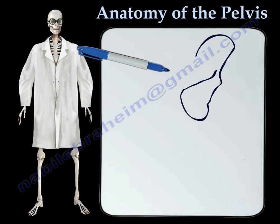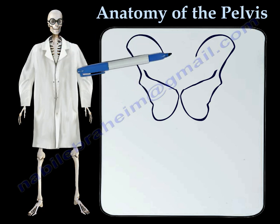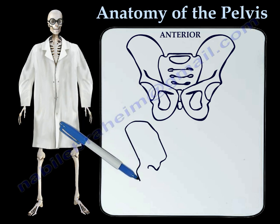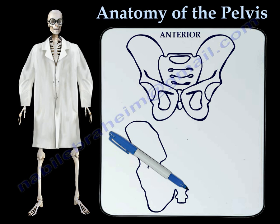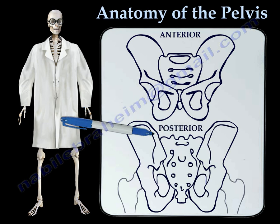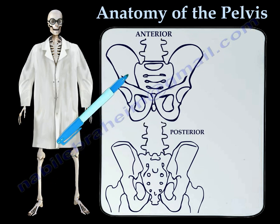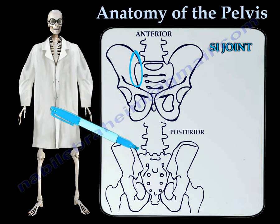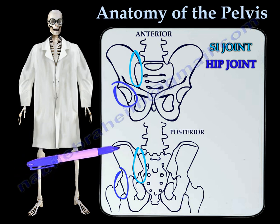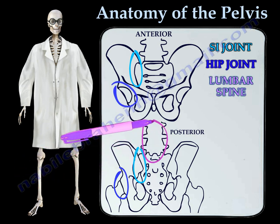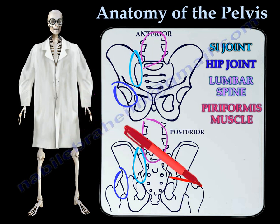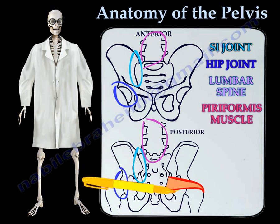Let's get started by drawing out the interior pelvis, and finally the posterior pelvis. Here you can see the SI joint, the hip joint, the lumbar spine, the piriformis muscle, and the sciatic nerve.